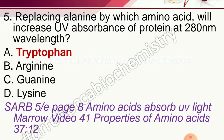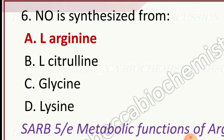Question 5: Replacing alanine by which amino acid will increase UV absorbance of protein at 280 nanometer wavelength? Options are lysine, tryptophan, arginine, and guanine. The correct answer is tryptophan.